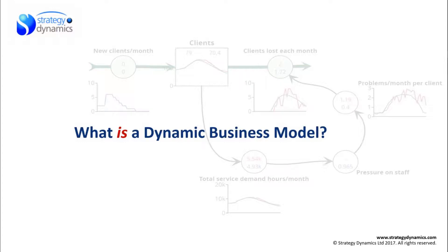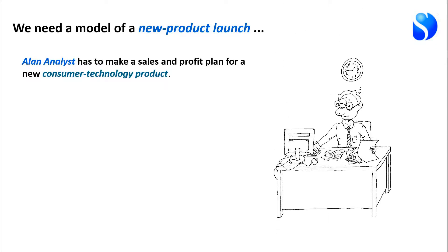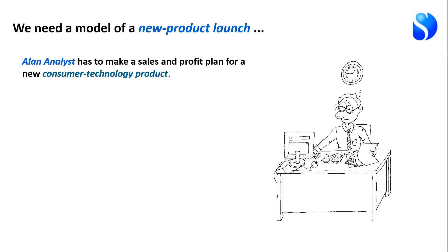Let's get stuck into an example of what a dynamic business model actually looks like. We're looking at a company that wants to model the launch of a new product from the point of view of Alan Analyst, who's got to make the sales and profit plan.